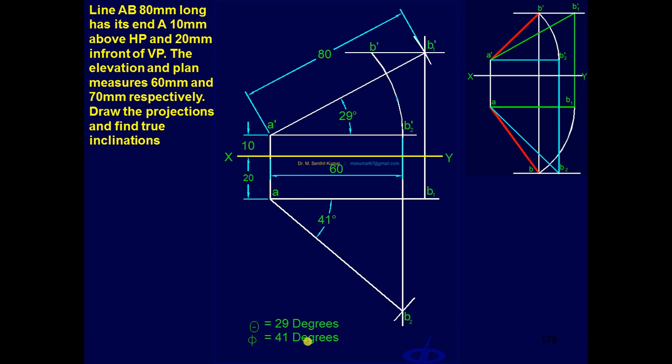In the front view side, draw an arc locus, get B', draw a line joining A'B' - that is the final front view. In the top view side...